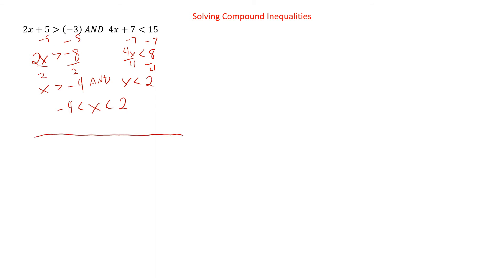And we can make our graph. We have our number line with negative four, zero, and two. Both of these are just less thans, so they're both open circles. Then we just connect them. So it's everything in between negative four and two, but not actually including negative four or two.